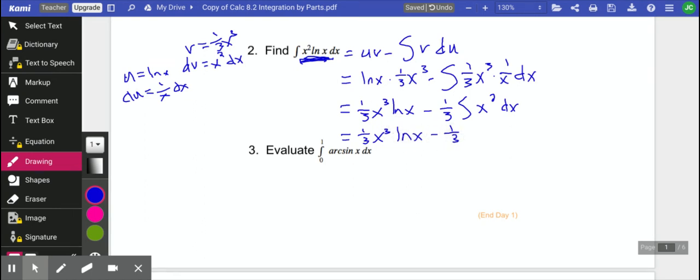So we get 1 third x cubed natural log of x minus 1 third. The antiderivative of x squared is 1 third x cubed. And then our last step would be to just rewrite this.